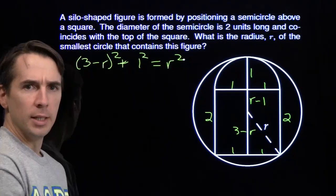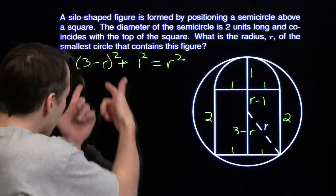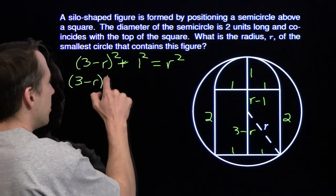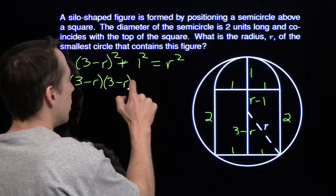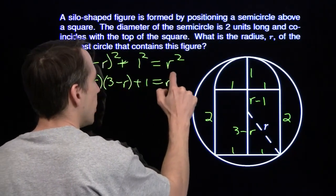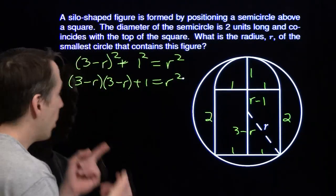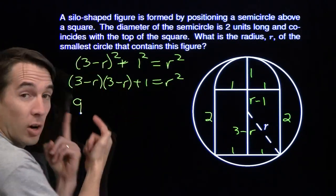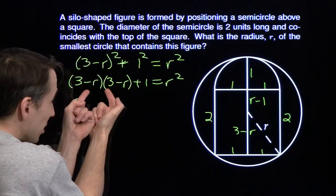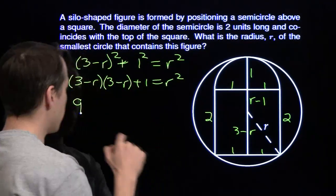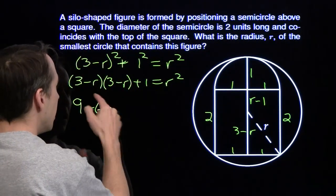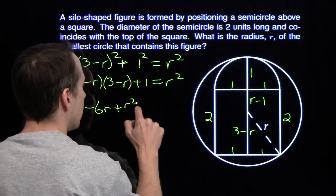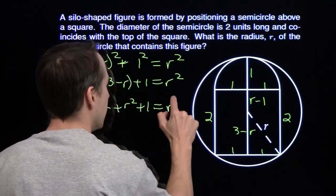I can go 3 minus r squared plus 1 squared equals r squared. That's pretty easy to deal with. I'm going to write it out like this: 3 minus r times 3 minus r plus 1 equals r squared. And when we multiply this out, 3 times 3 gives us 9, 3 times minus r is minus 3r, minus r times 3 is another minus 3r, that gives us minus 6r. Minus r times minus r gives us plus r squared.